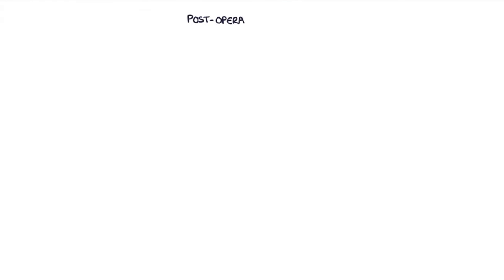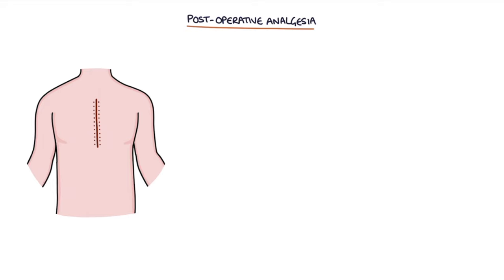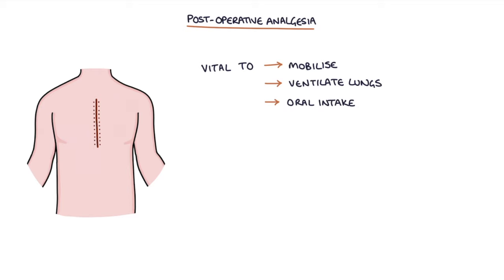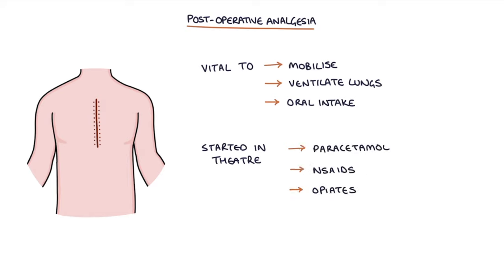Let's talk about post-operative analgesia. Adequate analgesia in the post-operative period is vital to encourage the patient to mobilize, ventilate their lungs fully — reducing the risk of chest infections and atelectasis — and to maintain an adequate oral intake. Analgesia is usually started in theatre by the anaesthetist with regular paracetamol, NSAIDs, and opiates if required, for example regular modified release oxycodone with immediate release oxycodone as required for breakthrough pain. The surgeon may also put a local anaesthetic into the wound to help with initial pain after the procedure.